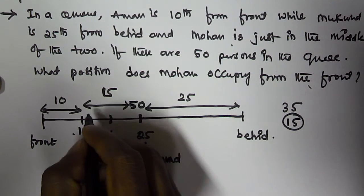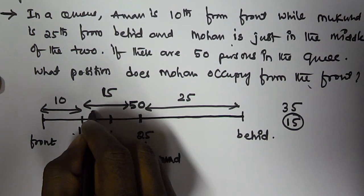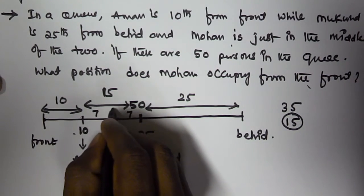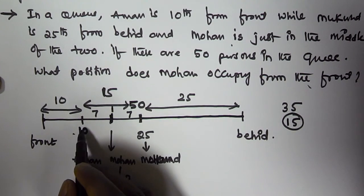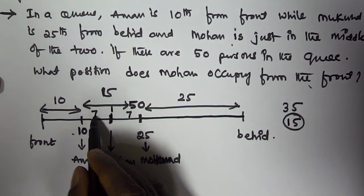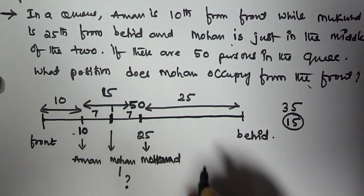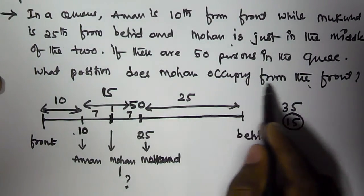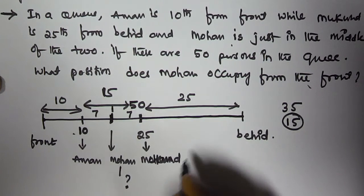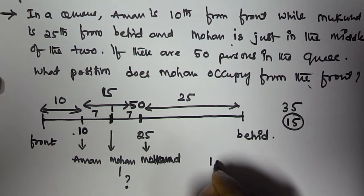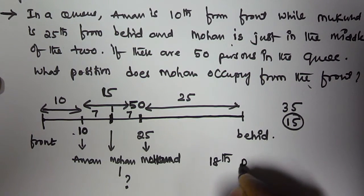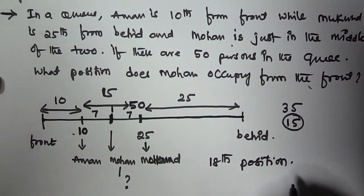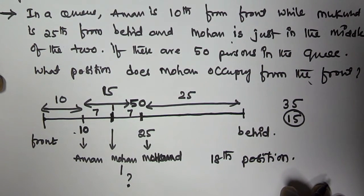If 15 people are there between Amun and Mukund, and Mohan is at the middle of the 15, then 15 can be divided as 7 and 7 with 1 in between. So that means 10 plus 7 is 17, plus 1 is 18. So Mohan occupies the 18th position from the front.